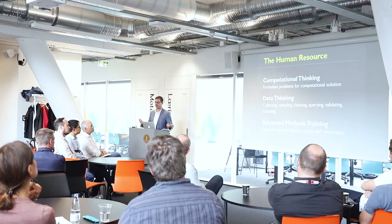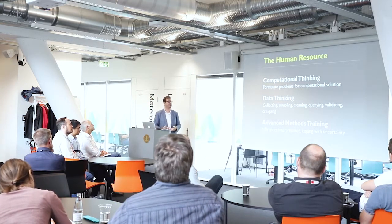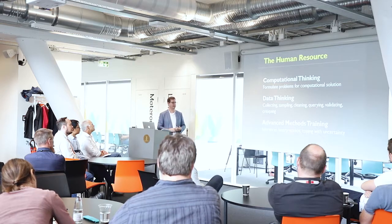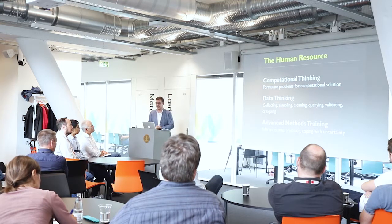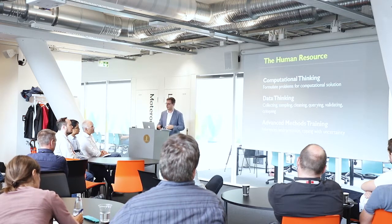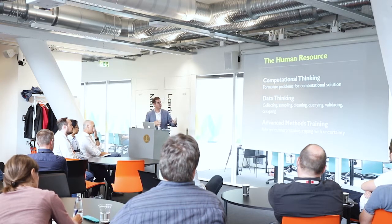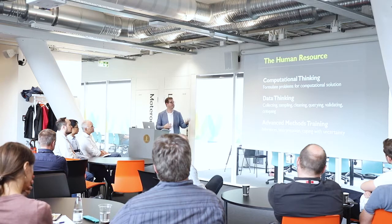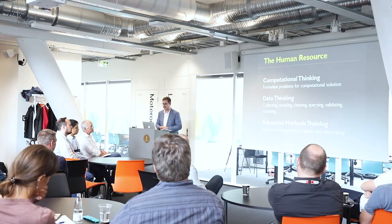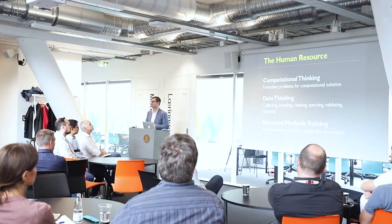Speaking at a university, we should be thinking about developing a human resource — training journalists so they can work more effectively with these types of hybrid systems. This includes computational thinking: training people to formulate problems so that solutions can be programmatically realized. Also data thinking — more data journalism skills around knowing the limitations of data, how to critique it, sample it, and validate it. For a certain set of computational journalists, some amount of advanced methods training will be valuable as well.